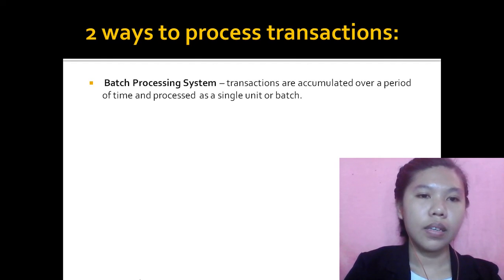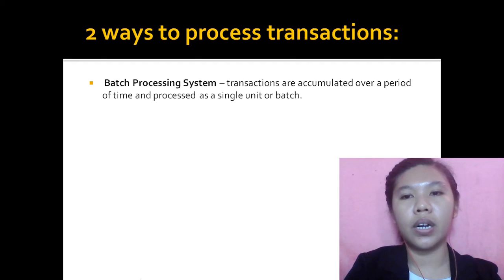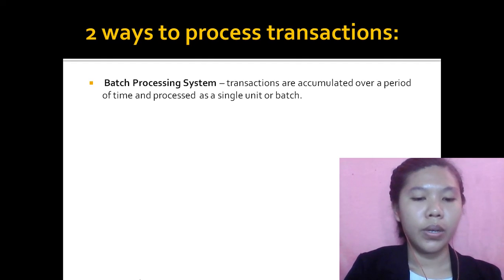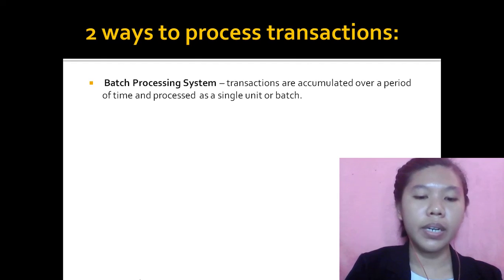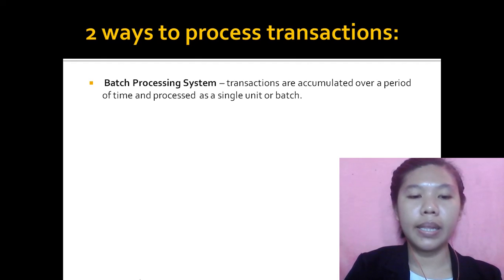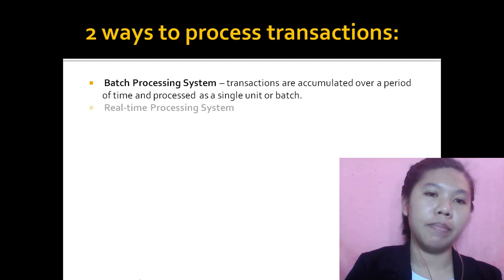The first is batch processing. Batch processing is where transactions are accumulated over a period of time and processed as a single unit or batch. For example, a store may update its sales records every day after the store closes. There is some time delay between the actual event and the processing of the transaction to update the records.